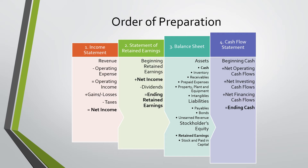The fourth financial statement we prepare is the cash flow statement. This is beginning cash plus net operating cash flows, plus net investing cash flows, plus net financing cash flows, which equals ending cash balance.